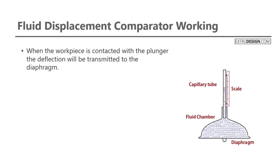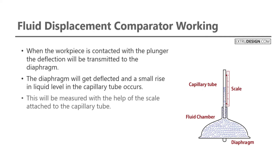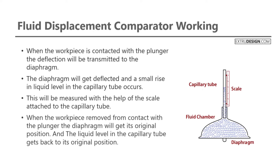When the workpiece is contacted with the plunger, the deflection will be transmitted to the diaphragm. The diaphragm will get deflected, and a small rise in liquid level in the capillary tube occurs. This will be measured with the help of the scale attached to the capillary tube. When the workpiece is removed from contact with the plunger, the diaphragm returns to its original position, and the liquid level in the capillary tube gets back to its original position as well.